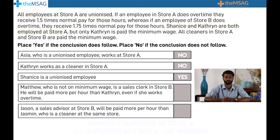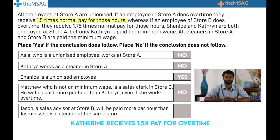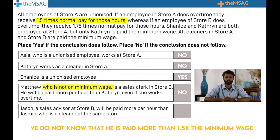Question 1.4: The answer is no. The conclusion that Matthew, who is not on minimum wage, is a sales clerk in store B and will be paid more per hour than Catherine, even if she does work overtime, is not justified. If Catherine does overtime, she will receive 1.5 times pay for those hours. While we do know that Matthew is paid more than the minimum wage, we do not know that he is paid more than 1.5 times the minimum wage.